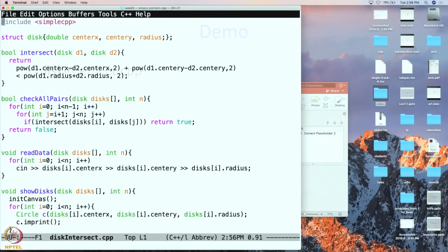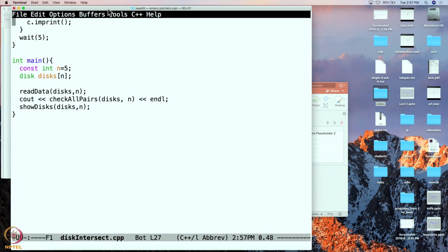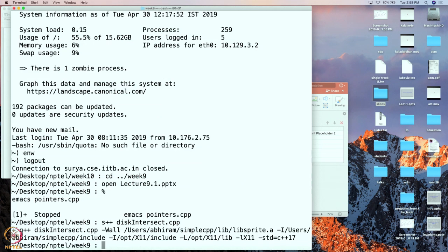Let us do a quick demo of this. Here is my program. Here is the disk structure type, the intersect function, the check all pairs function, read data. Now I've also added over here a show disks function. At the end, it's going to show us the disks on our canvas. This way we'll know whether our intersection answer is correct or not. Following this, we have the main program. Really what we had in the slides plus this additional show function. In the main program as well, we're going to print out the answer whether there's an intersection or not, and then we're going to show whether the disks are intersecting or not.